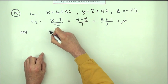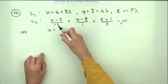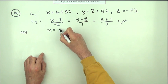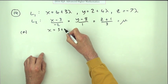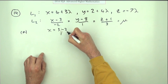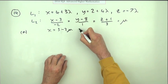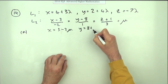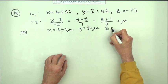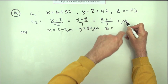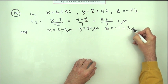So I need to rearrange this. So that means for L2 we would have x equals 3 minus 2mu, y equals 8 plus mu, and z would be negative 1 plus 3mu.